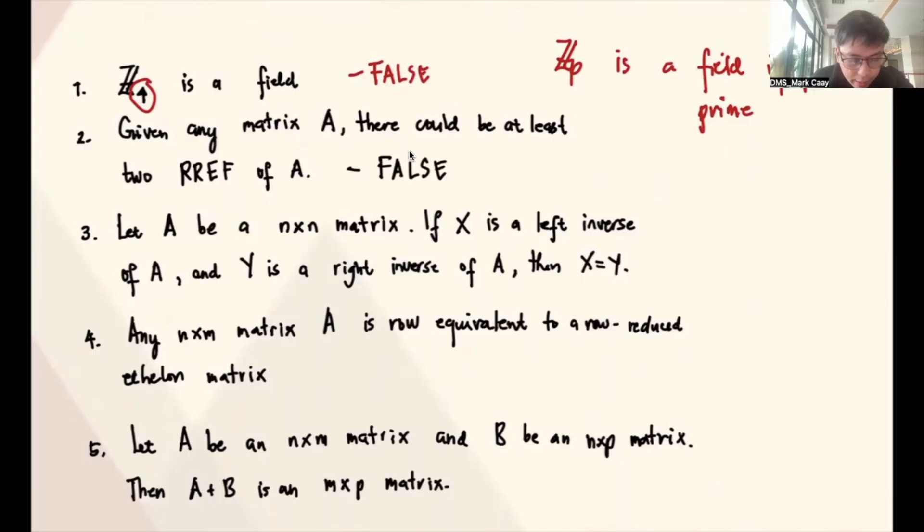Number 3: Let A be an N by N matrix. If X is a left inverse of A, and Y is a right inverse of A, then X is equal to Y. Okay, let's talk about that. When I say X is a left inverse, it means X times A is equal to identity. When we say right inverse, A times Y is identity. So we have these equations.